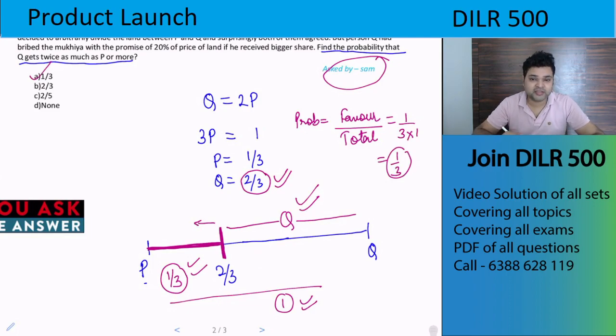So geometrical probability - these are the types of questions in geometrical probability. There are many more questions in geometrical probability. I'll try to find those questions and I'll try to create videos of those questions as well.